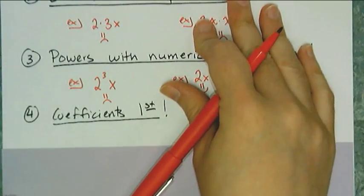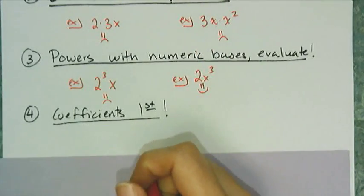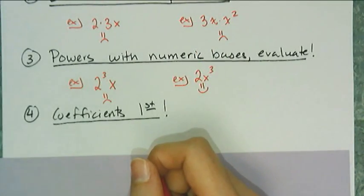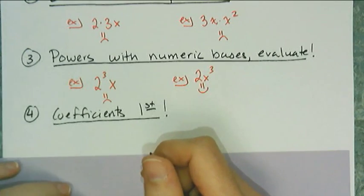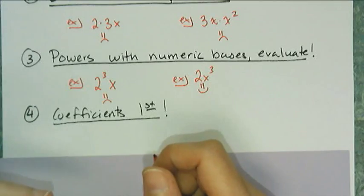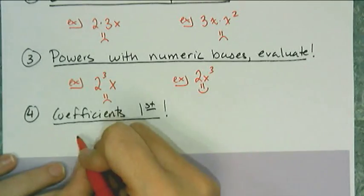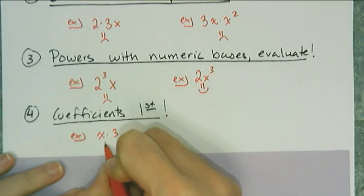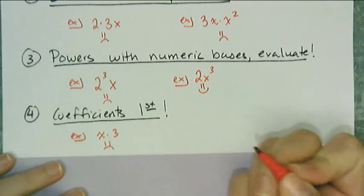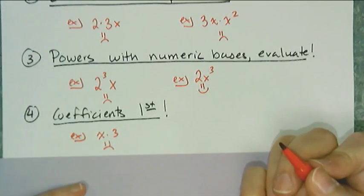The fourth rule is that coefficients come first. When you were writing pattern formulas and equations before, I didn't care where you put the multiplication. But now we're getting more sophisticated, so your rules need to fit a format. If I want to multiply x times 3, I don't write it that way — the coefficient has to come first, so I write 3x, not x times 3.